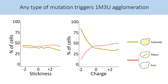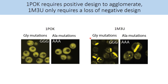To confirm this hypothesis, we introduced two specific sets of mutations: one was triple glycine, and the other was triple alanine. Both are considered relatively neutral mutations. In the case of 1-POC, both the triple glycine and the triple alanine gave cytosolic phenotypes, showing that positive design is required to force 1-POC to create agglomerates. On the contrary, in 1-M3U, both triple glycine and triple alanine mutations still agglomerated, showing that 1-M3U requires only a loss of negative design to agglomerate.